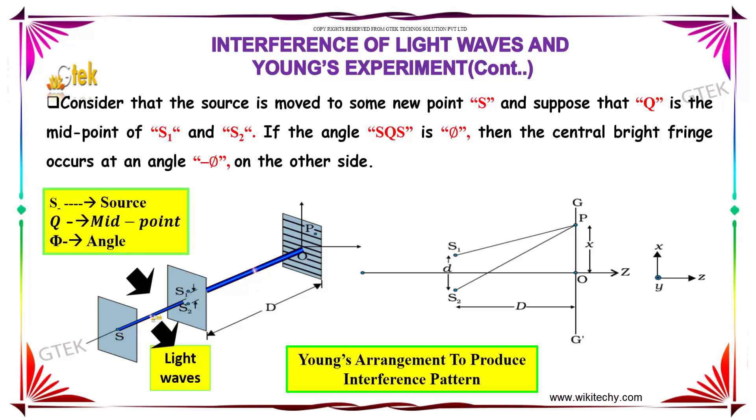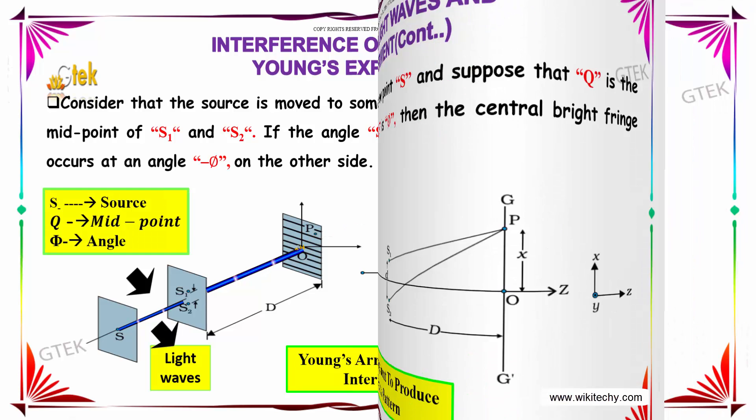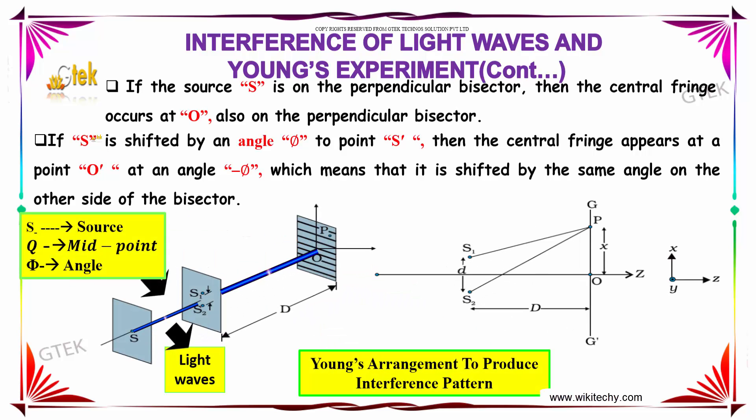Then the central bright fringe occurs at an angle -φ on the other side. If the source S is on the perpendicular bisector, then the central fringe occurs at O, also on the perpendicular bisector.